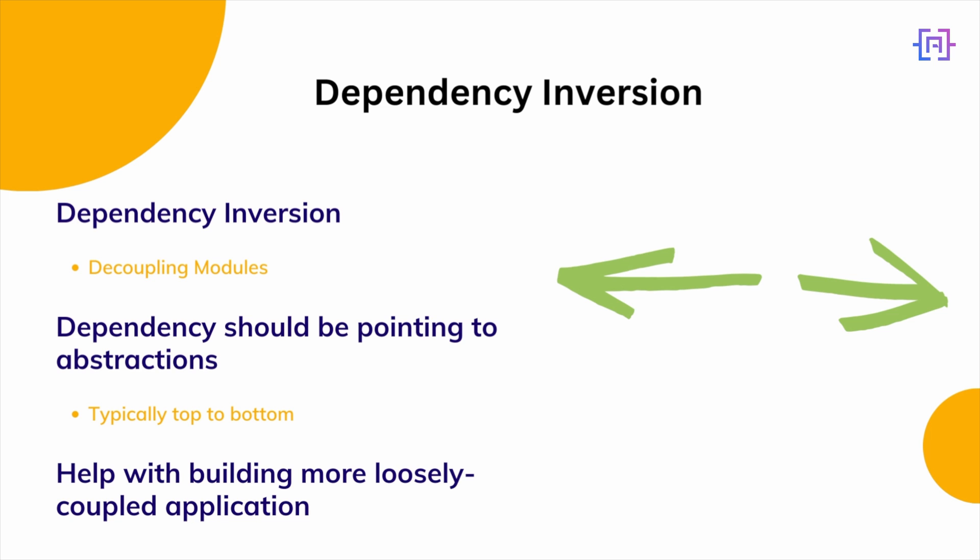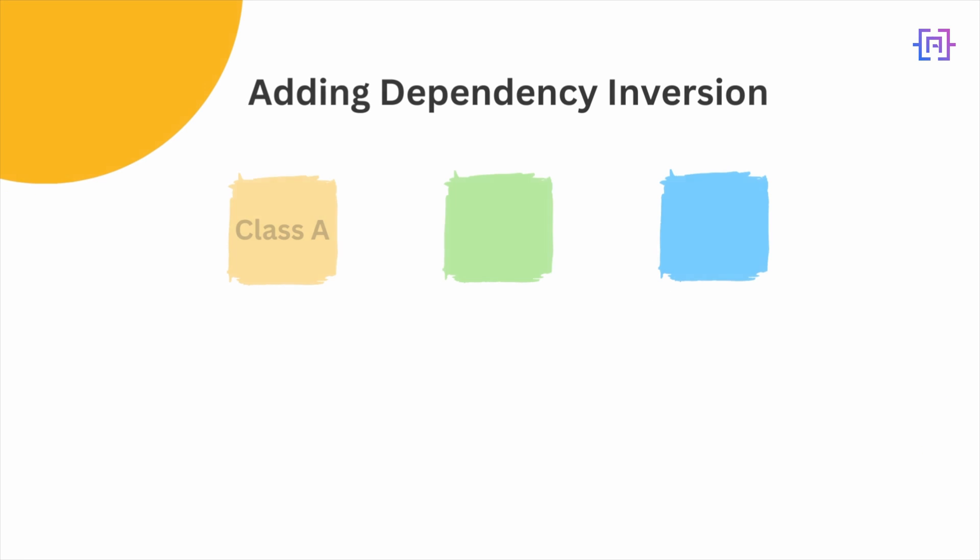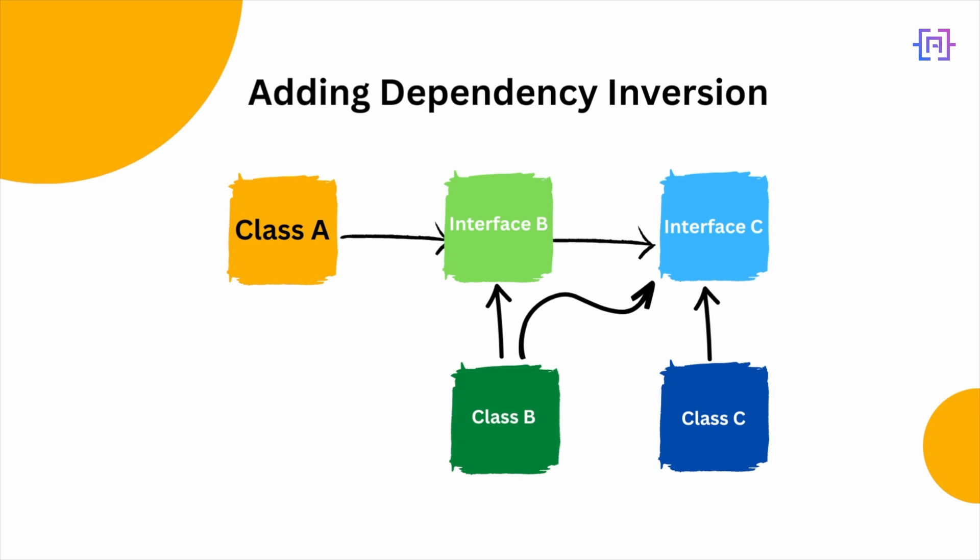Dependencies should thus be pointing to the abstraction, not to the details. Let us have a look at an example. Typically we will have a number of classes: class A depends on B, and class B depends on class C. To use them we introduce a reference from one class to the next, creating tight coupling at compile time. Testing the code in class A becomes more difficult because it is tightly linked to class B.